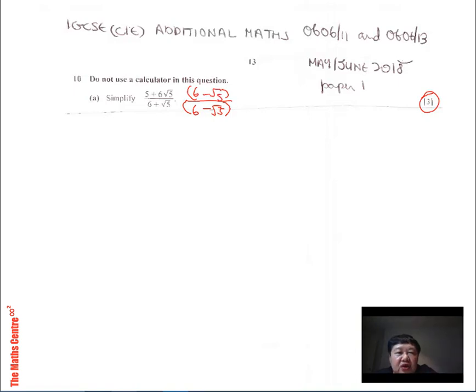And then you expand very carefully. Now, my own way of expanding is first multiplied by first. First term multiplied by first is 30. The second multiplied by second, 6 root 5 times negative root 5 will be negative 6 times 5. Remember root 5 times root 5 is 5, root x times root x is x.